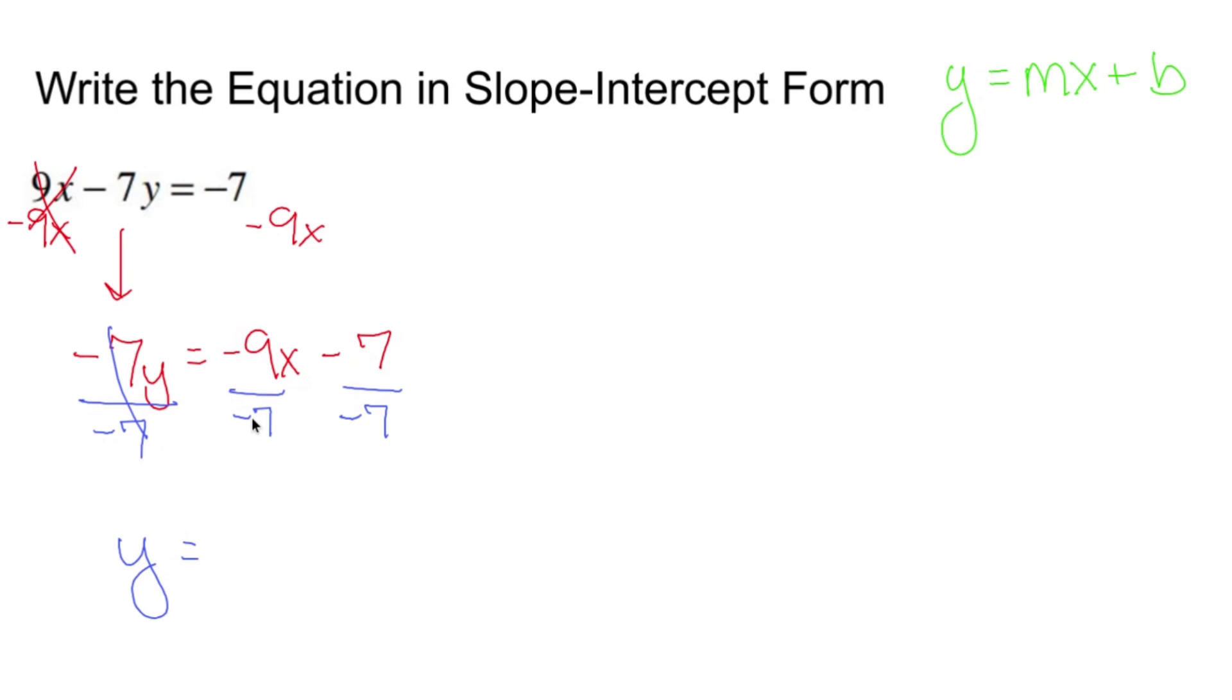Negative 9 over negative 7. Negative over negative is a positive. And 9 over 7 doesn't simplify. I'm going to leave it as an improper fraction because I want my number to be a regular old improper fraction to look like rise over run.